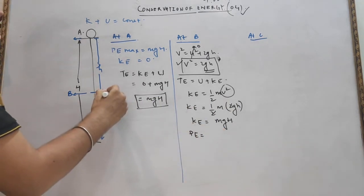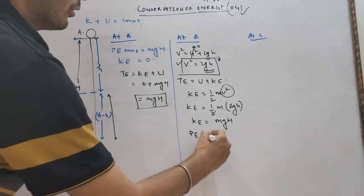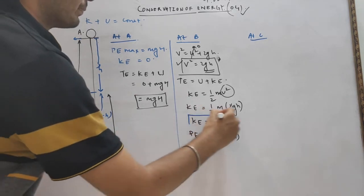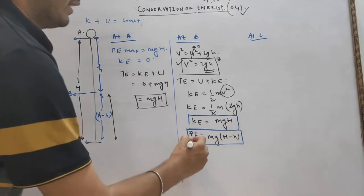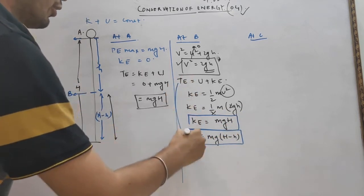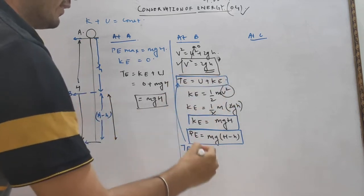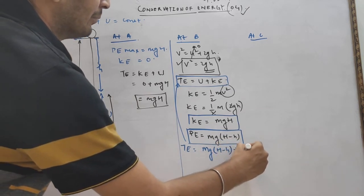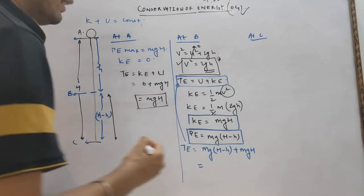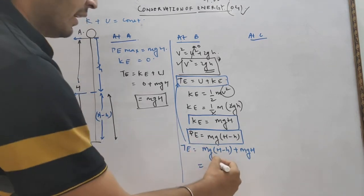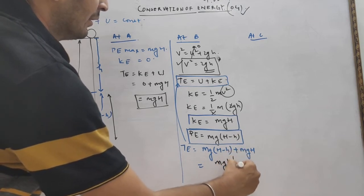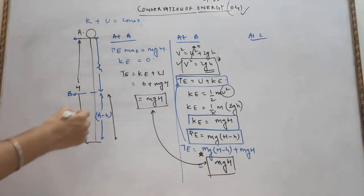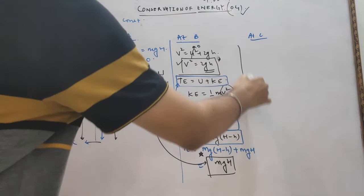While potential energy at point B equals mg(H − h), since only that height remains. So total energy at point B equals kinetic energy plus potential energy, that is mgh + mg(H − h), which again equals mgH. So total energy at point B is the same as at point A.